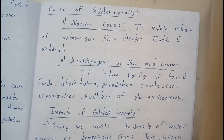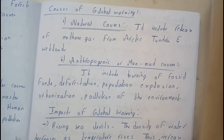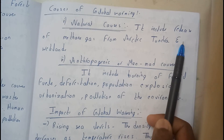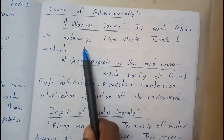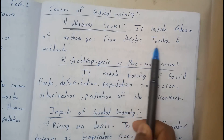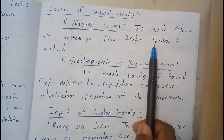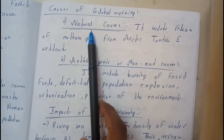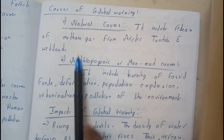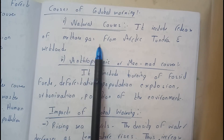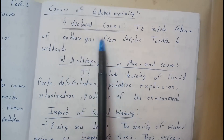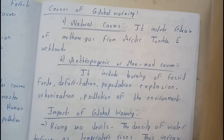Manmade causes we can call them as anthropogenic causes. Natural causes include the release of methane gas from arctic tundra and wetlands — places where methane gas is evolved frequently — and that causes global warming.